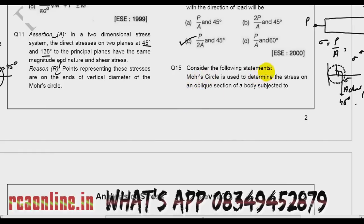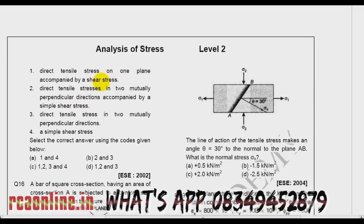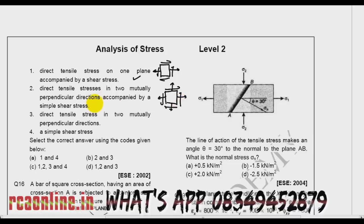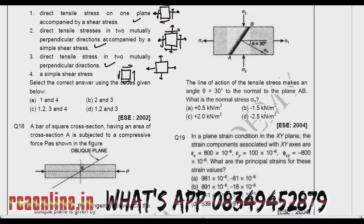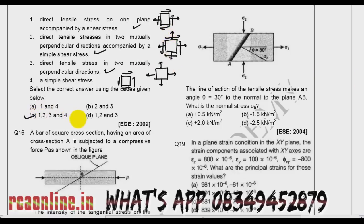Question number 15: The Mohr circle is used to determine the stress on an oblique section of a body subjected to: (1) direct tensile stress on one plane accompanied by a shear stress; (2) direct tensile stress on two mutually perpendicular directions; (3) direct tensile stress in two mutually perpendicular directions with shear; (4) a simple shear stress. I can draw the Mohr circle for all four stress elements, so 1, 2, 3, and 4 are all correct.